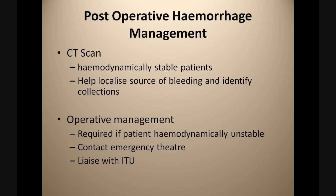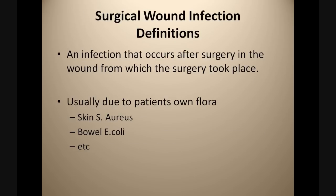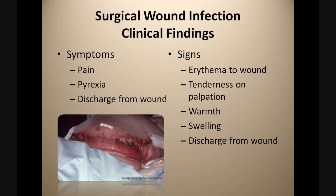A surgical wound infection is an infection that occurs after surgery in the wound through which the surgery took place. It is usually due to infiltration of bacteria from the patient's own flora — from the skin it could be Staphylococcus aureus, from the bowel it may be E. coli. These patients often complain of pain at the site, may be pyrexial, and may experience discharge from the wound. When we look at the wound we notice surrounding erythema, tenderness on palpation, warmth, surrounding oedematous swelling, and discharge.